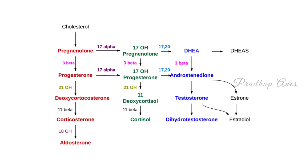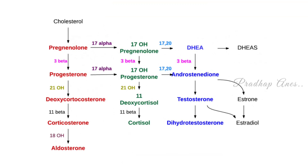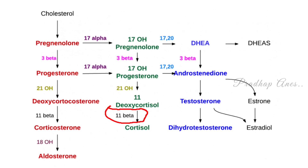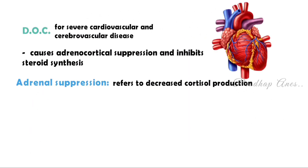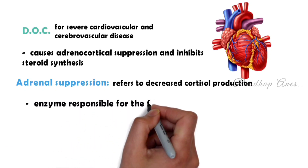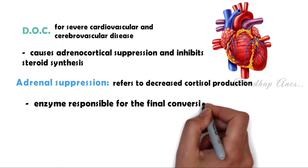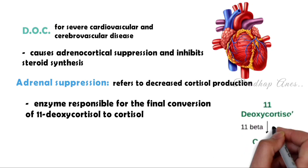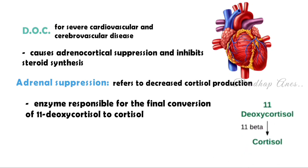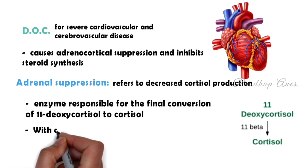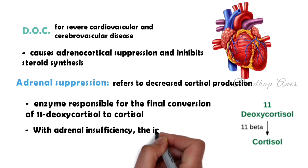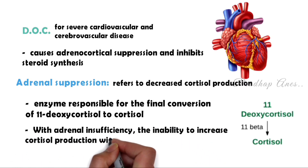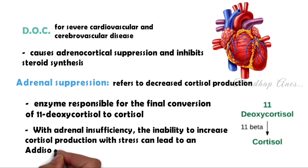Etomidate can decrease the production and secretion of cortisol from the adrenal gland through direct inhibition of the enzyme 11-beta-hydroxylase — the enzyme responsible for the final conversion of 11-deoxycortisol to cortisol. With adrenal insufficiency, the inability to increase cortisol production with stress can lead to an Addisonian crisis.